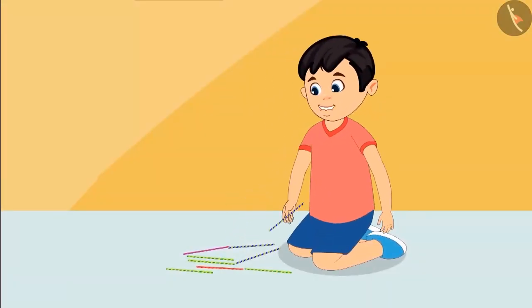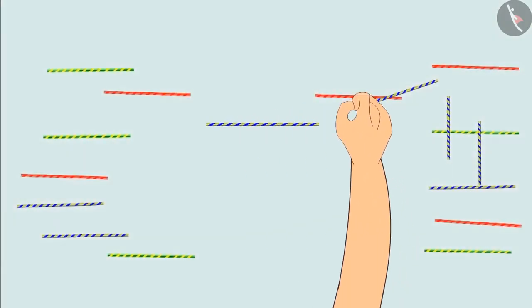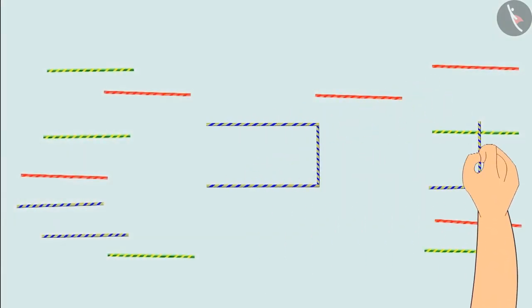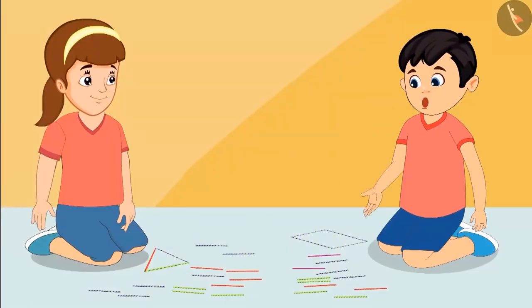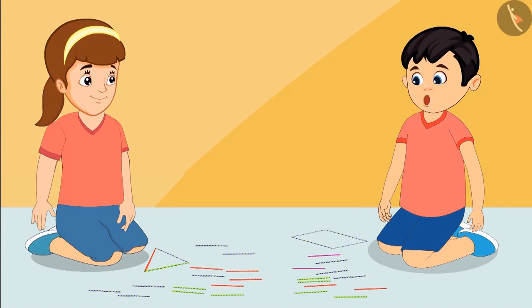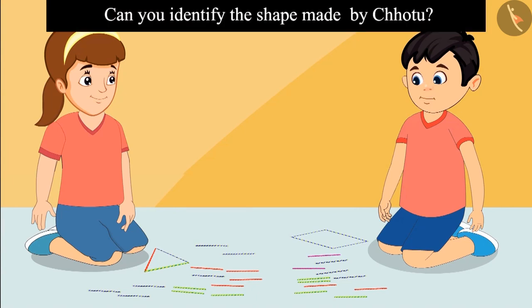Neha, now let me try and you tell me what I have made. Okay Chotu, I made the shape with four straws. So tell me, what is this shape? Children, do you know which shape is this? Come on, let us see.